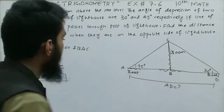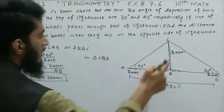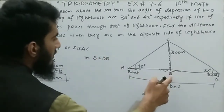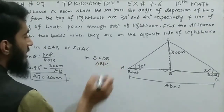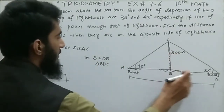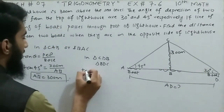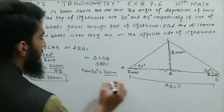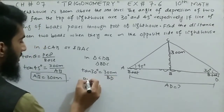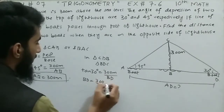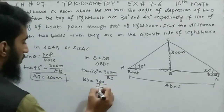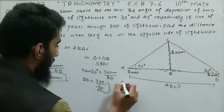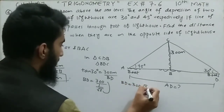Now taking triangle BDC (angle at D, which is 30 degrees): tangent theta equals perpendicular 300 meters divided by base BD. So tangent 30 degrees equals 300 divided by BD. Tangent 30 equals 1/√3. Shifting: BD equals 300 meters divided by (1/√3) = 300√3 meters.